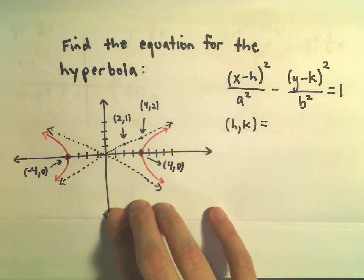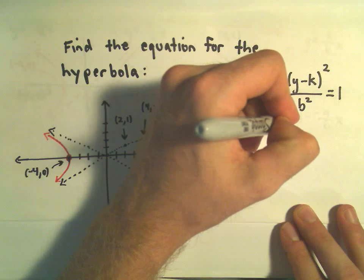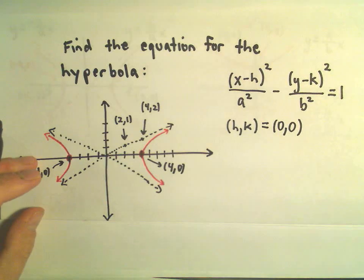Okay, it looks like our asymptotes here are crossing then at the point 0, 0. So that means my h,k is going to be equal to 0, 0. So I can fill that in at any point.